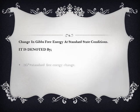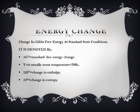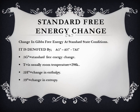The next slide is about standard free energy change, which explains the change in Gibbs free energy at standard state conditions. It is denoted as ΔG° = ΔH° − TΔS°. Here ΔG° expresses standard free energy change, T is usually room temperature which is 298 K, ΔH° expresses change in enthalpy, and ΔS° is change in entropy.